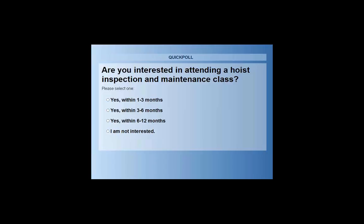Final poll: Are you interested in attending a hoist inspection and maintenance class? Upcoming training: August 12-16 is a Chain and Wire Rope Hoist Repair Technician Certification in Tonawanda, New York, covering lever tools, chain falls, electric hoists, wire rope hoists, air hoists, and electrical troubleshooting — a full week. August 20-22 is an external inspection class covering cranes and hoists without the repair component.